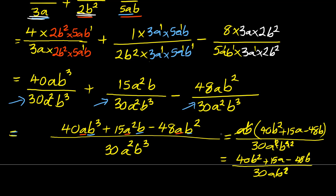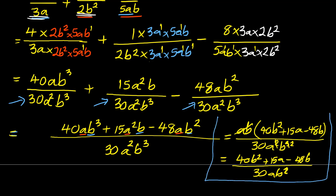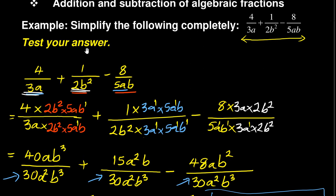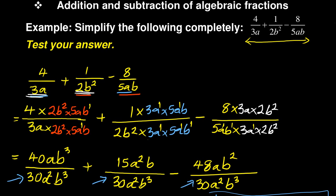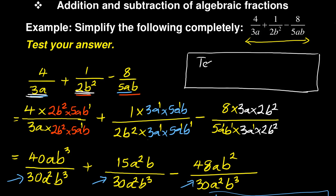Okay, this was supposed to simplify to that. But I'm interested in testing this version of the answer. How do you test this answer? You put a kind of a box for testing. Let my a be equal to 2 and my b be equal to 3. You can also choose any number for the value of a and b — you just choose any number, but you must maintain: where there is a, you put the value of a; where there is b, you put the value of b.